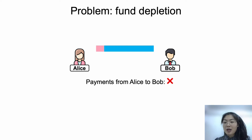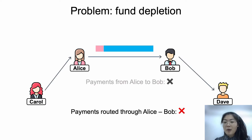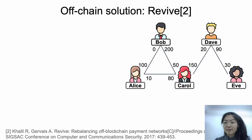But the payment channel faces the problem of fund depletion. When Alice's balance in the channel is depleted, she couldn't initiate payments in the channel. Moreover, the multi-hop payments that route through the channel may also fail due to the lack of coins in the hop. Therefore, the off-chain network throughput is undermined. The off-chain solution, Revive, states that one user could refund the depleted channel using coins in other channels in the off-chain manner. This process is also called rebalancing.